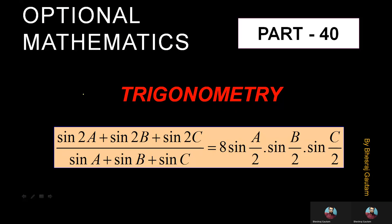Welcome back to the problem from conditional trigonometric identities. In the given question we'll start from the left hand side which is sin 2A plus sin 2B plus sin 2C, whole divided by sin A plus sin B plus sin C, and we are supposed to prove this equals 8 sin(A/2) sin(B/2) sin(C/2).